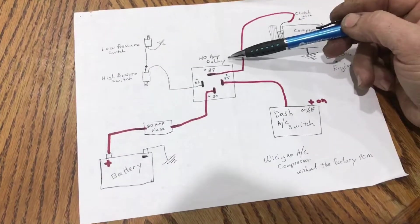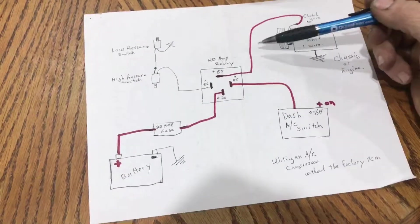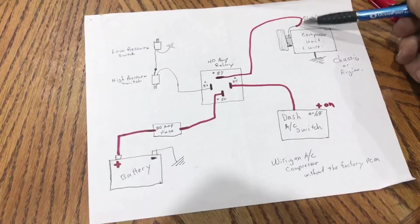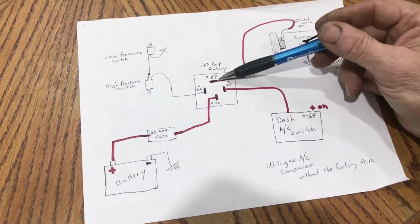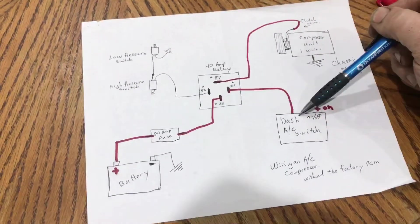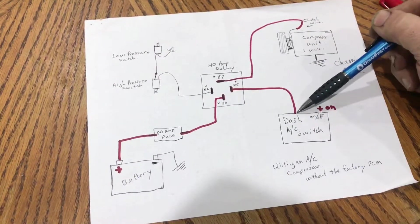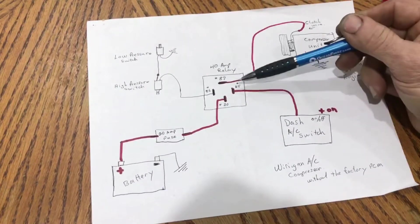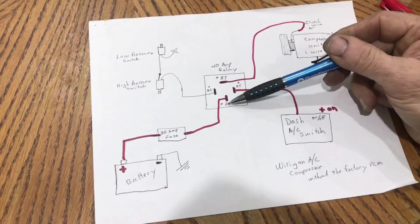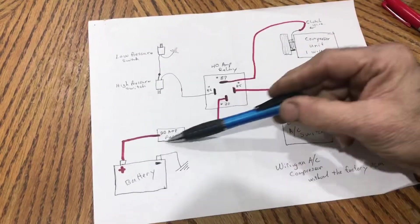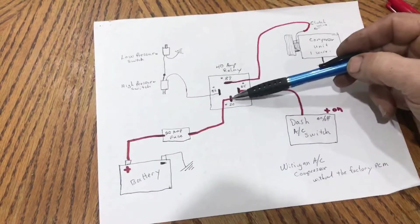You're going to need a 20 amp inline fuse. The wire coming out of the compressor, it's a one wire deal, goes right to terminal 87. The dash on-off switch positive, when you turn the switch on, check it with a test light, has to be positive. That goes to terminal 85. Terminal 30 is your live that's hot all the time through a fuse, so that comes directly from the battery.